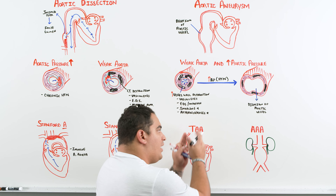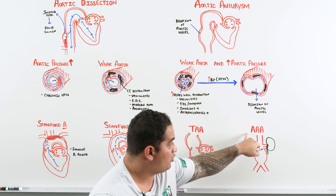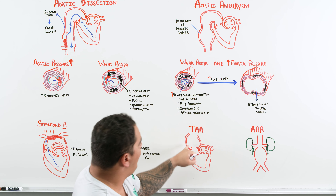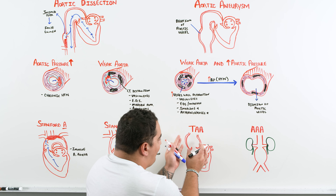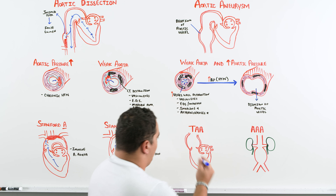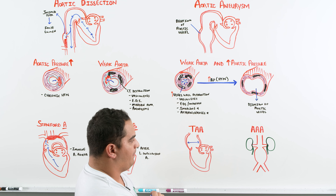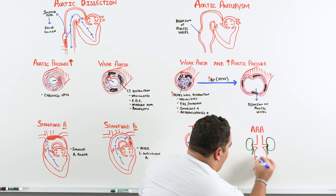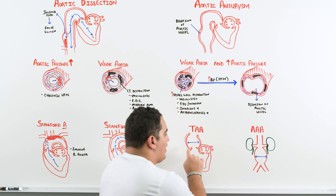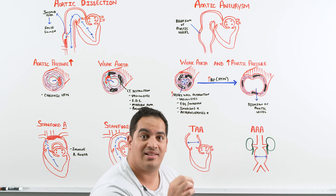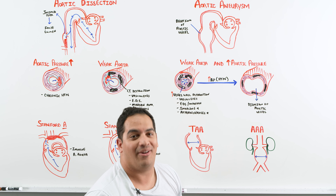We classify aortic aneurysms similarly to dissections. There are thoracic aortic aneurysms (TAA) and abdominal aortic aneurysms (AAA). The distinction is straightforward: where is it relative to the diaphragm? Thoracic aortic aneurysms are above the diaphragm; abdominal aortic aneurysms are below.